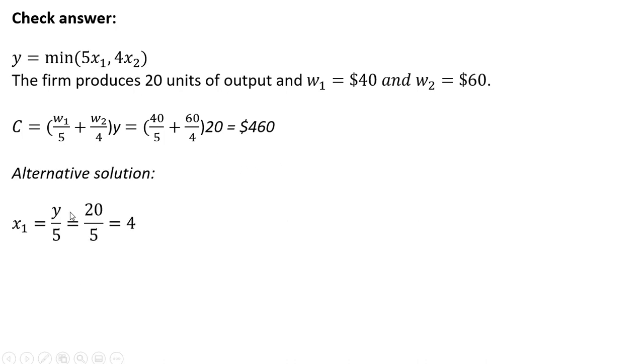An alternative solution is the appropriate quantity of input 1 is just going to be the output divided by 5. So we saw this expression on the first slide. So the firm should use 4 units of input 1.